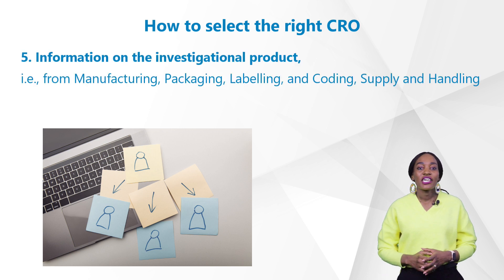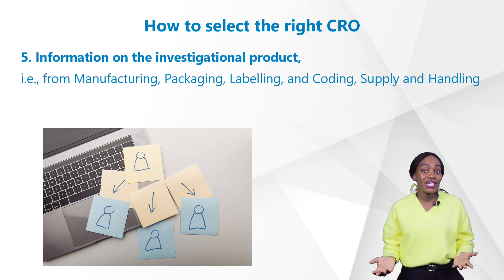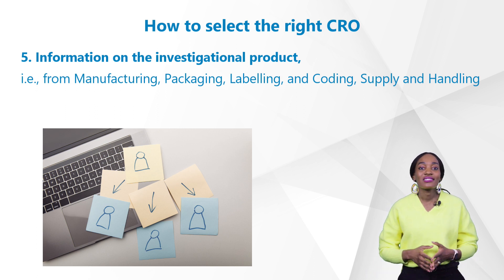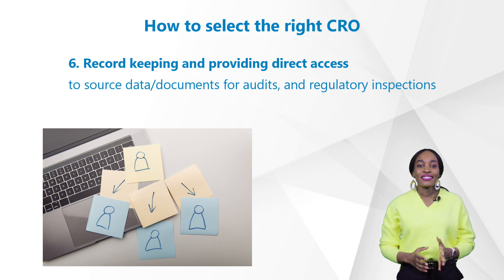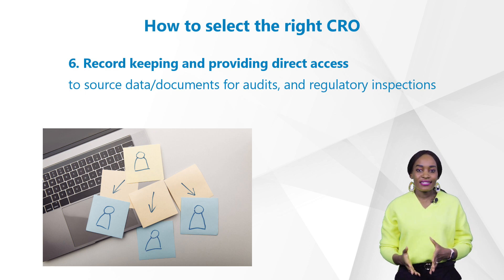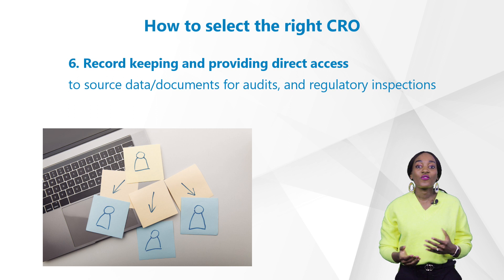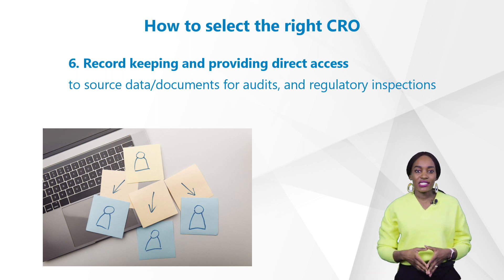Five: information on investigational products — that is from manufacturing, packaging, labeling and coding, supply and handling. Six: record keeping and providing direct access to source data and documents for audits and regulatory inspections.